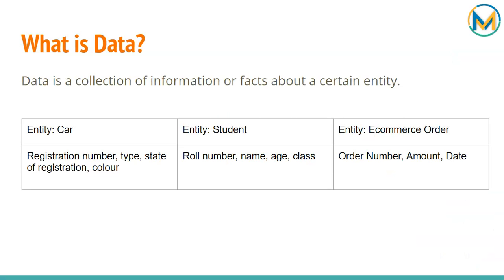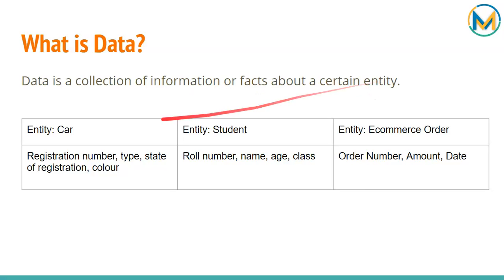Before we start, let us look at the fundamental entities that come under database. The first thing you need to know is what is data. Data is the fundamental unit of information. Data is a collection of information or facts about a certain entity. An entity could be a real-world object like a car, a vegetable, a student, or an e-commerce order — entity is anything that exists in the real world.